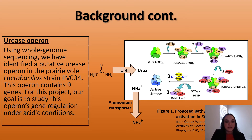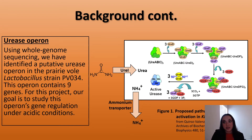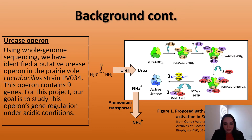Using whole genome sequencing, we have identified a urease operon in the prairie vole Lactobacillus strain PEV034. This has nine genes total, and for our project specifically, our goal was to study the operon's gene regulation under acidic conditions. To the right, I have a diagram that shows these genes in a proposed pathway. UreI brings in the urea, and UreA, B, C are the subunits. As it goes through its pathway, accessory genes are added and then it produces ammonia at the end.